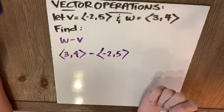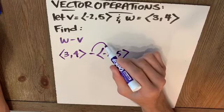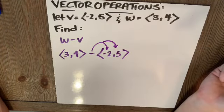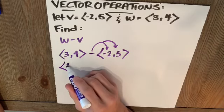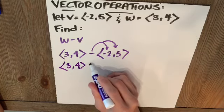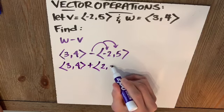So I can think of this as adding the opposite. If I multiply this vector V by a scalar negative 1, I get 3, 4 plus 2, negative 5.